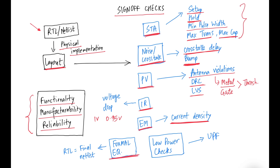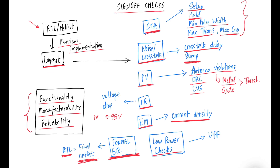The next check is formal equivalence or logical equivalence. This ensures the functionality of the final netlist is the same as what was originally coded in the RTL, catching any accidental logical or functional changes introduced during physical implementation. Similarly, low power checks ensure that all low power strategies defined in the UPF are implemented as expected in the design — just as formal equivalence validates functionality, low power checks validate power intent.